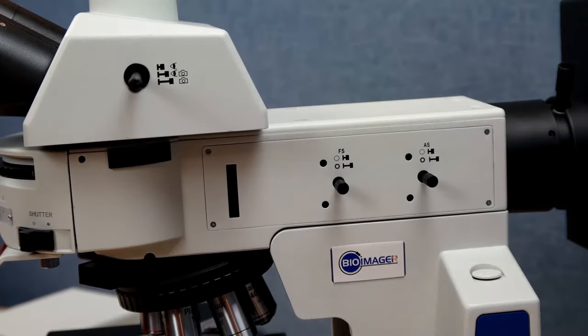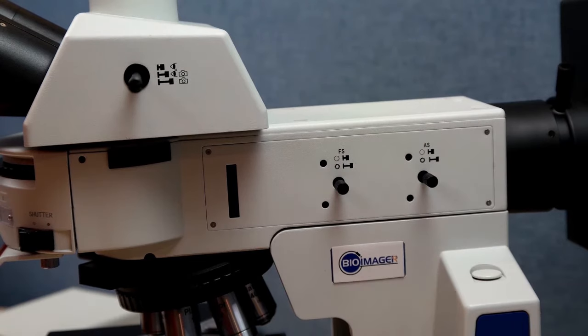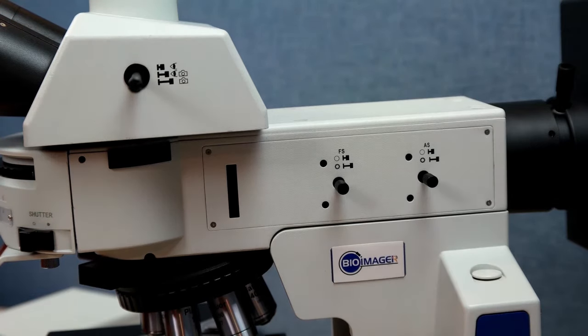To use this microscope for different imaging modes, you can get an epi-white attachment that is mainly used for industrial or metallurgical applications. That package includes a 100 watt halogen, and you can use this system for bright field, dark field, polarization, and DIC imaging modes.